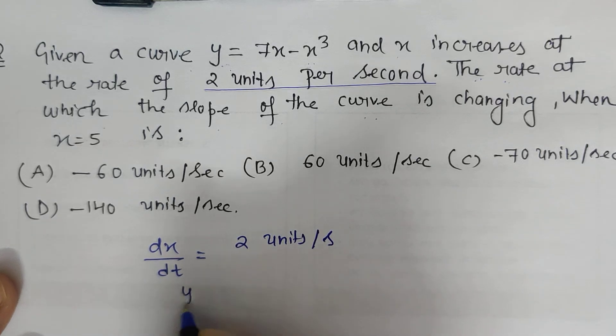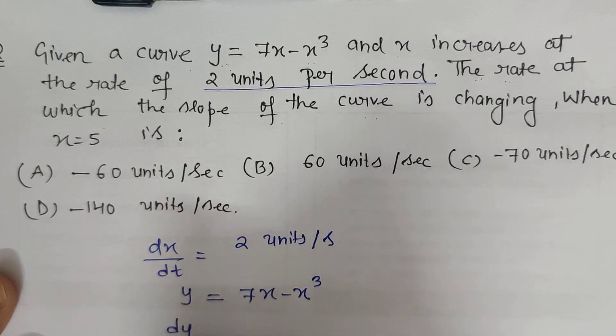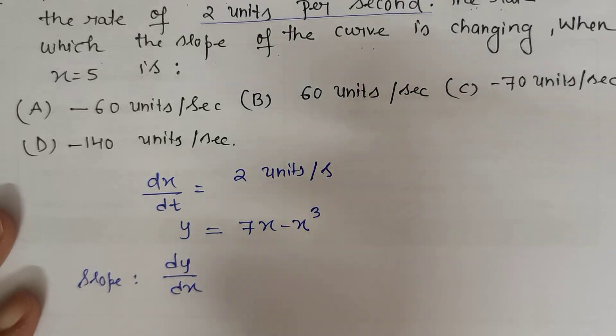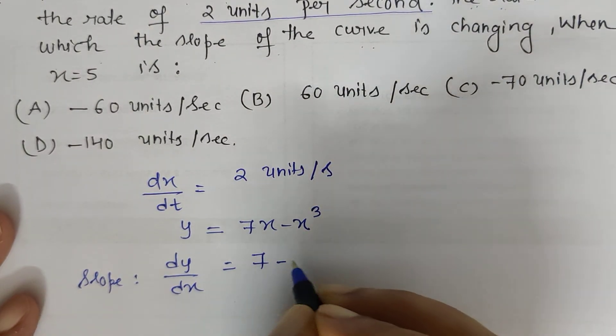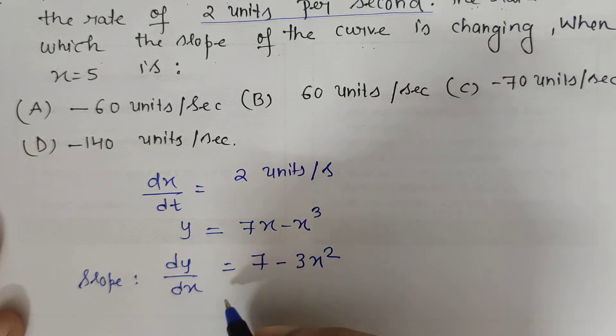That means we have to find the rate of change of the slope. So first we have to find the slope from the given curve equation. The slope is dy/dx, which is my slope. dy/dx equals 7 - 3x².